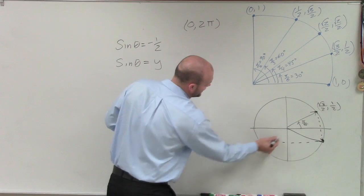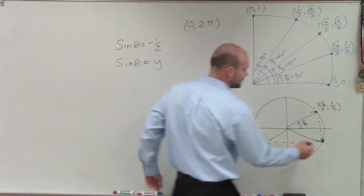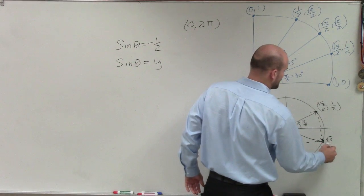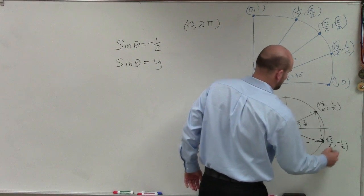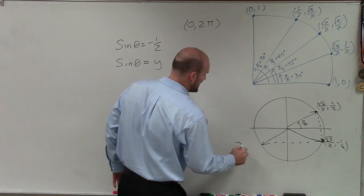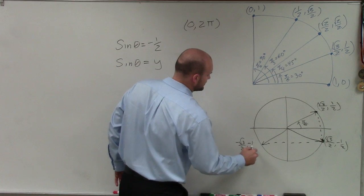And then I can also reflect that over here to get at that angle. Because therefore, you could see that this would be square root of 3 over 2 comma negative one-half. And this angle would be negative square root of 3 over 2 comma negative one-half.